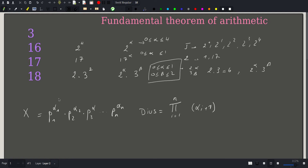So alpha i plus 1 represents our choices for alpha i. For example, alpha 1 can be 0, 1, 2, 3, up to alpha 1, giving alpha i plus 1 total choices. The number of divisors is just equal to this product, and all that is left is to find the prime factorization for the given numbers.